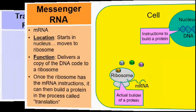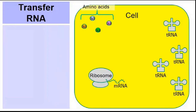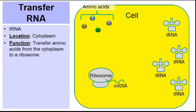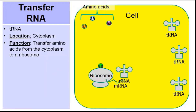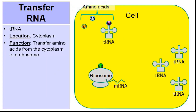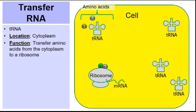DNA is the instructions or the blueprint to build all the proteins that we need. But the actual maker of the protein is a ribosome — the actual builder of the protein — and that's out in the cytoplasm. So what does mRNA do? It makes a copy of the DNA code, a copy of the DNA instructions, and messenger RNA will deliver the instructions from the nucleus to the ribosome. Once the ribosome has the instructions, it will build a protein by gathering a bunch of amino acids and linking them in a long chain, which is a protein. This process is called translation.